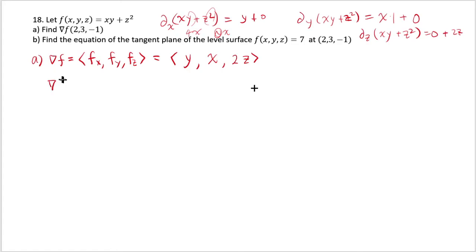And what is gradient evaluated at 2, 3, negative 1? Well, you think of the first value as x, second as y, third as z. So since y is 3, we put 3 here. Since x is 2, we put 2. And z is negative 1. Negative 1 times 2 is negative 2. So this is what we get for the gradient.